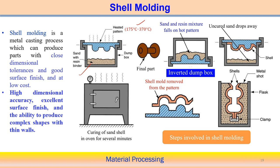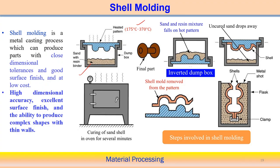We can see that a mold shell of certain thickness has formed in contact with the heated pattern. However, this shell may not be appropriate for immediate use. We need to perform curing of the sand shell in a furnace — keeping it at a certain temperature for a certain period of time — so it becomes harder. Afterwards, once curing is done, we remove the shell from the pattern.